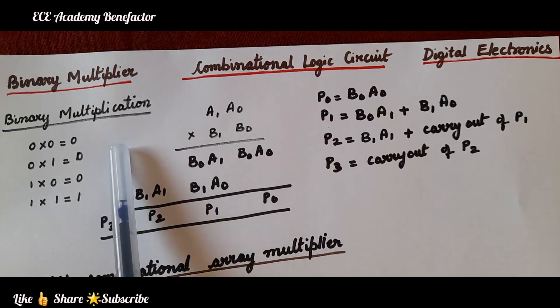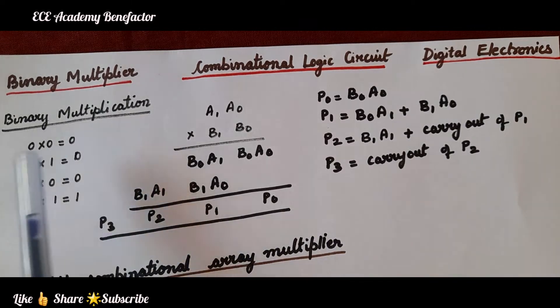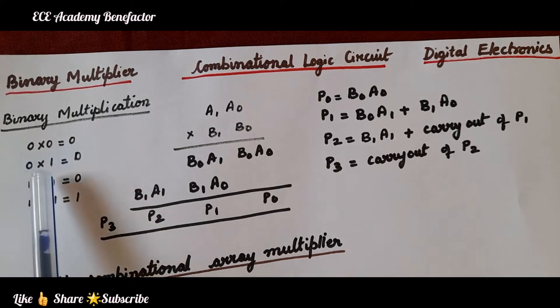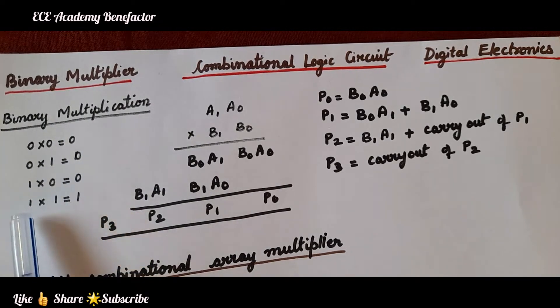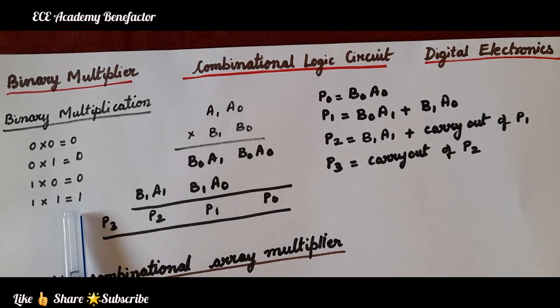Let us see binary multiplication first. 0 cross 0 is 0, 0 cross 1 is 0, 1 cross 0 is 0, 1 cross 1 is 1.